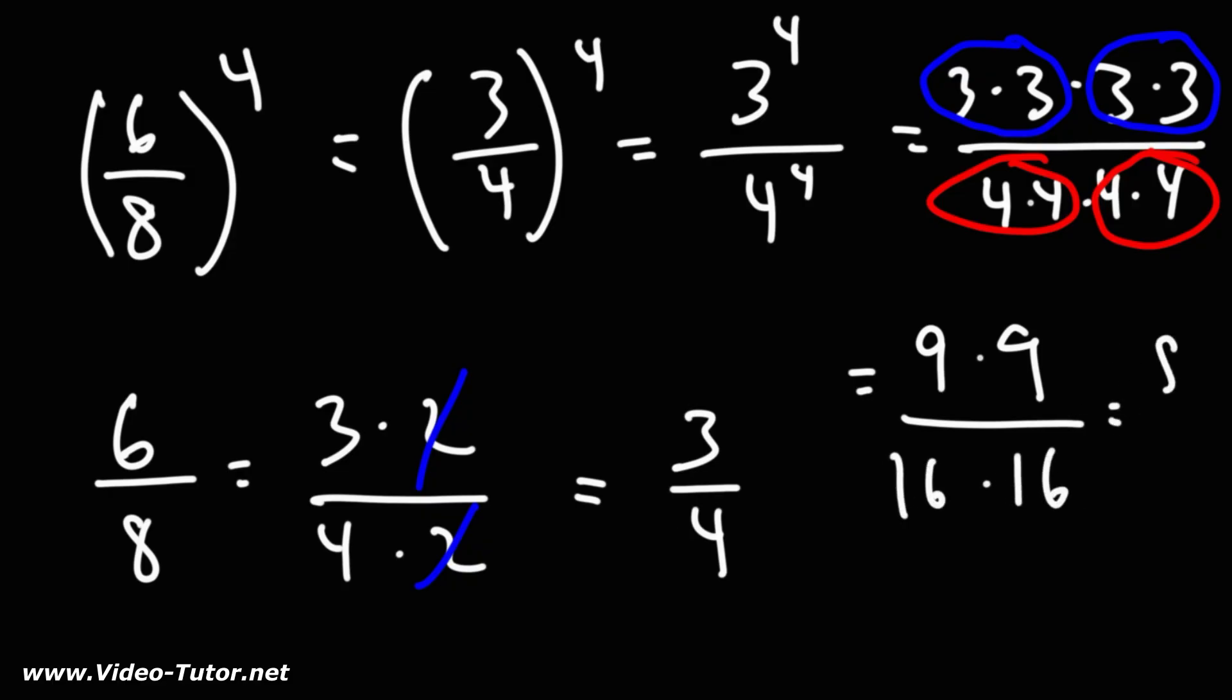9 times 9 is 81. 16 times 16 is 256. So the answer is going to be 81 over 256.